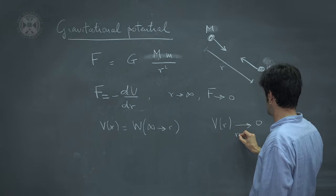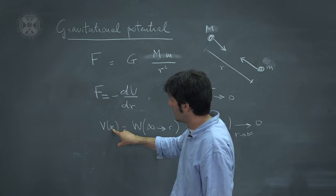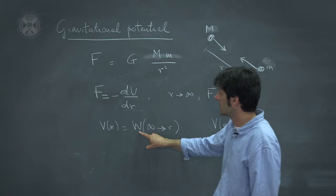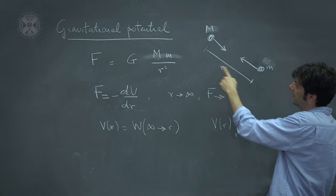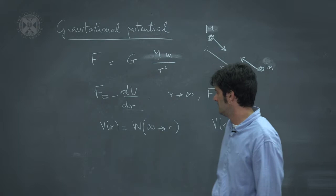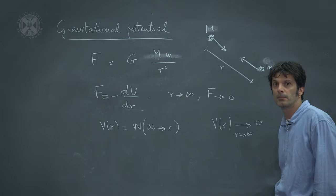And then the potential at some finite value of r is going to be the work that has to be done by the gravitational attraction to bring the particle little m from infinity to some finite distance r. Now you can compute this quantity. It's in one of the problems that you can find on the MOOC website.